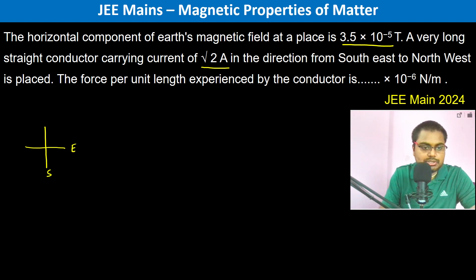This is south, east, north, and west. So this is how the conductor is placed, and the horizontal component of the earth's magnetic field...